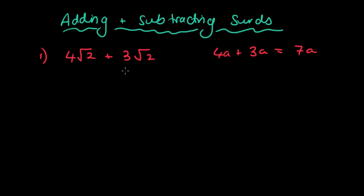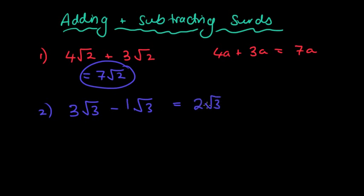If I've got 4 lots of root 2 and I'm adding 3 more lots of root 2's, then I've actually got 7 lots of root 2. So it's very similar to what we did with algebra. Likewise with subtraction, we've got 3 root 3's and I'm taking away 1 root 3. Then I've got 3 of them and I'm taking away 1 of them, so I've got 2 lots of root 3 left. So it's pretty straightforward.